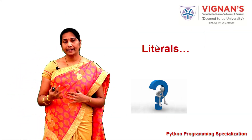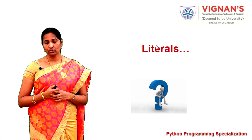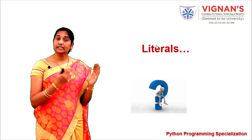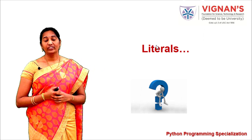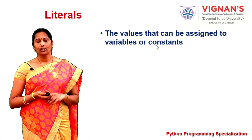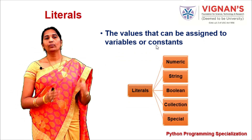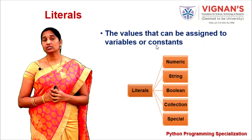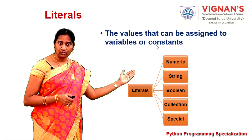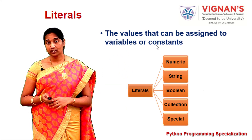Literals are the values that you assign to either variables or constants. Variables are names given to objects or values, constants are names given to values that cannot be changed, whereas literals are the actual values being assigned. Python provides a long list of literals: numeric type, string type, boolean type, special type, and collection type literals.